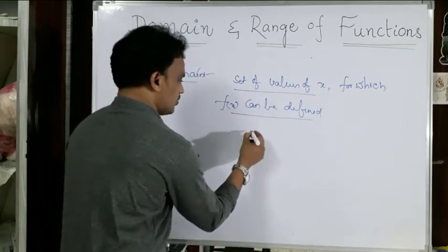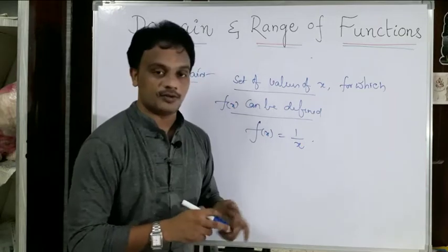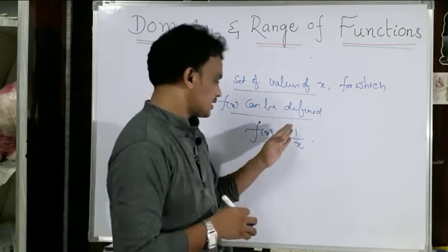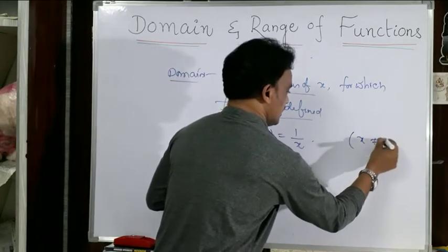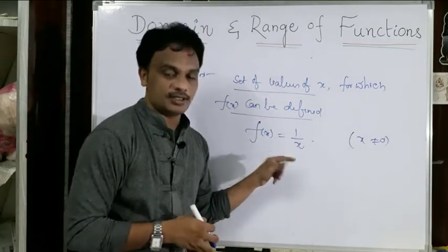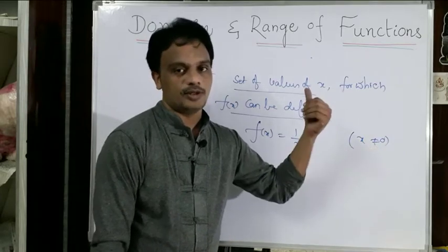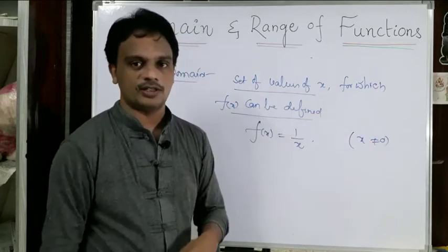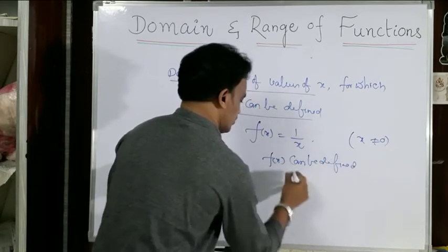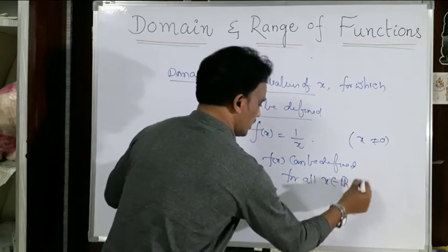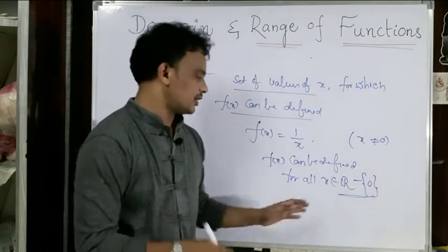For example, let f(x) = 1/x. This is in the form of P/Q, so denominator should not equal 0. When x ≠ 0, the function can be defined. That means, except x = 0, it can be defined. So f(x) can be defined for all x belonging to real numbers except 0 — we write ℝ minus {0}. The domain is all real numbers except 0.